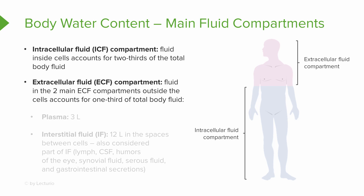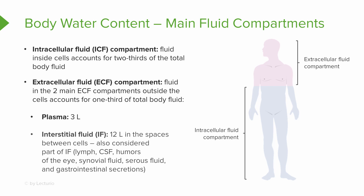The extracellular fluid compartment accounts for one-third of our total body fluid. The two body fluids found in our extracellular fluid compartment include our plasma, which is a component of our blood, and the interstitial fluid, which makes up about 12 liters of our total body fluid and is found in the spaces in between our cells.